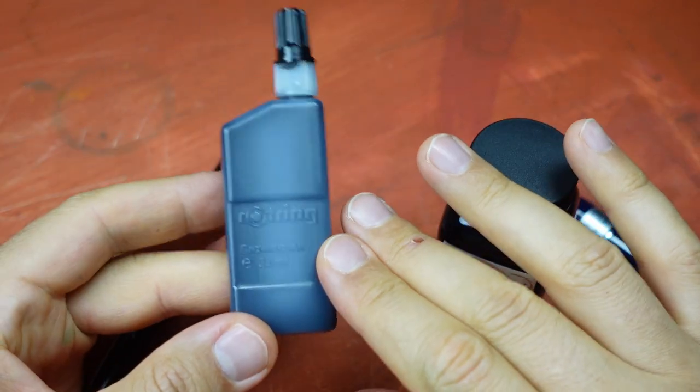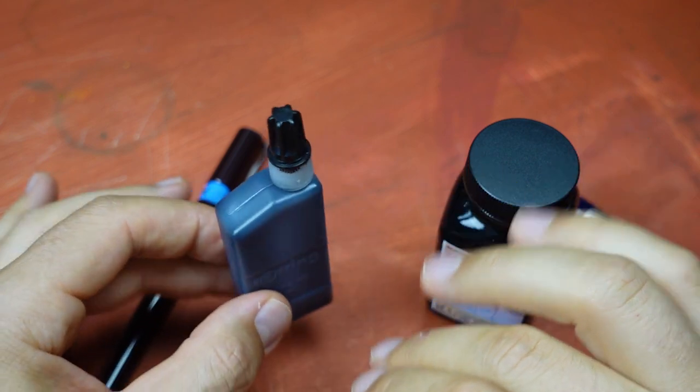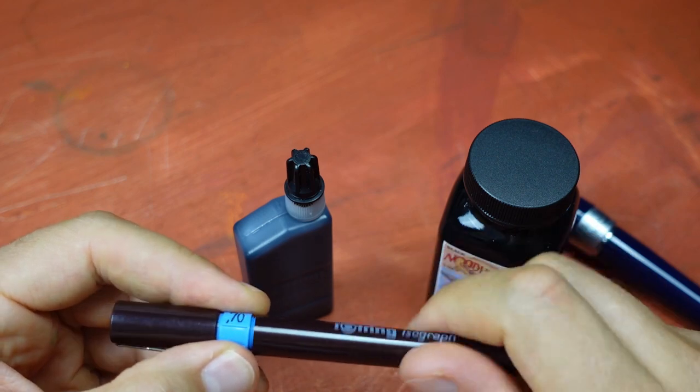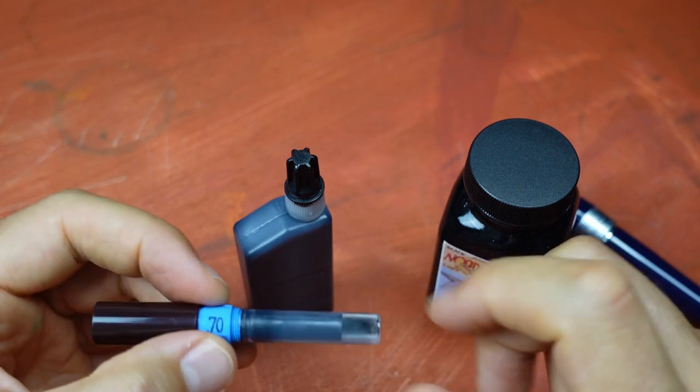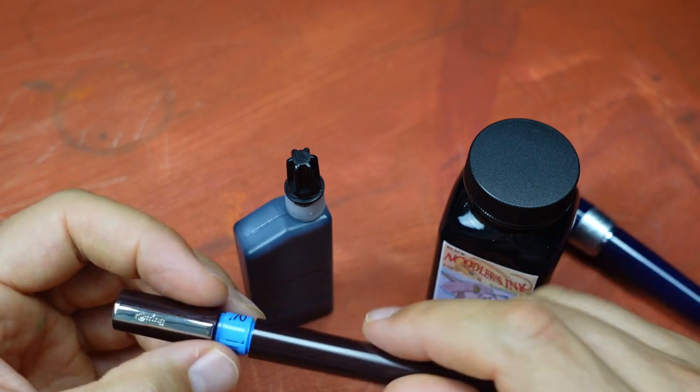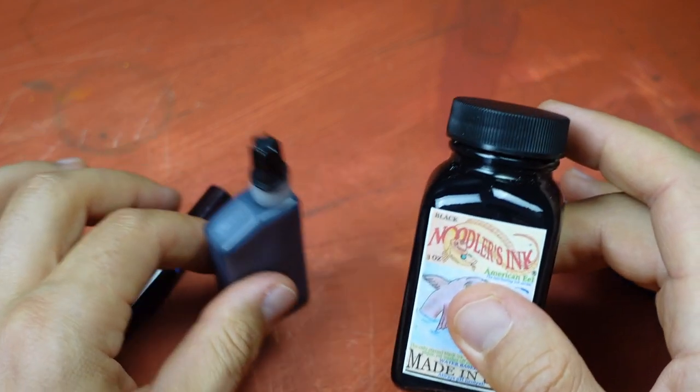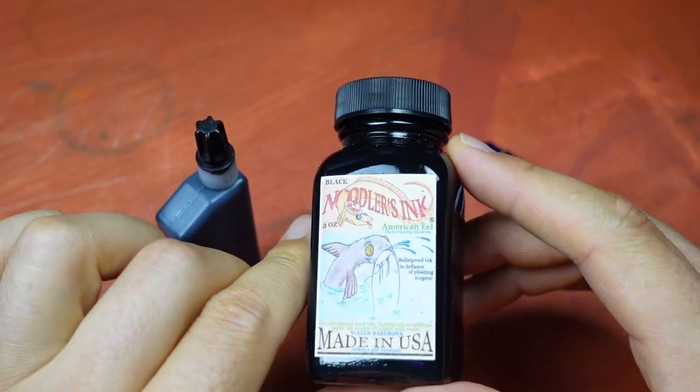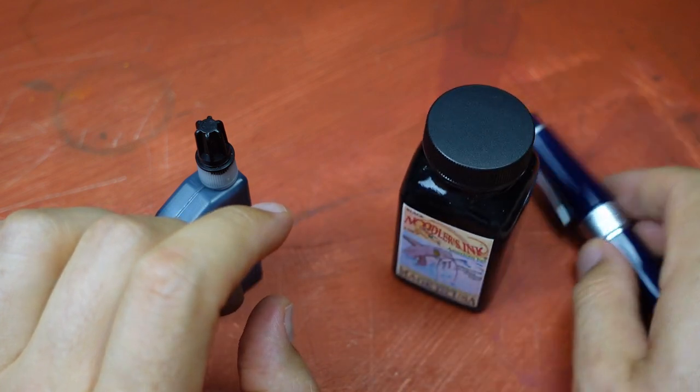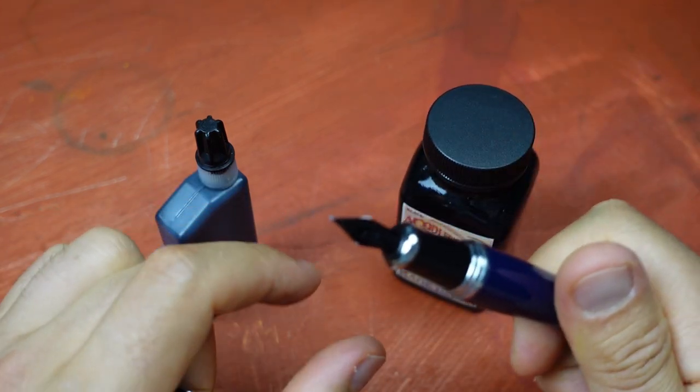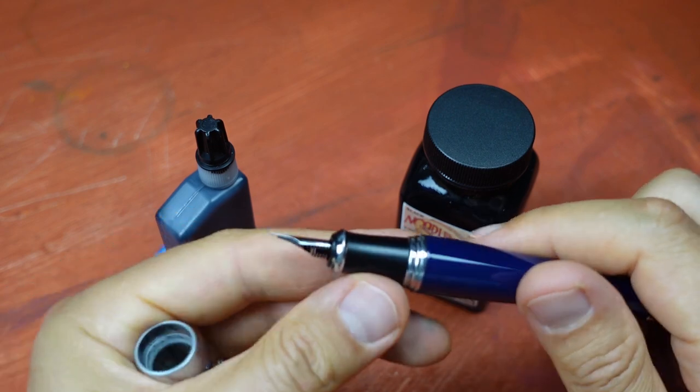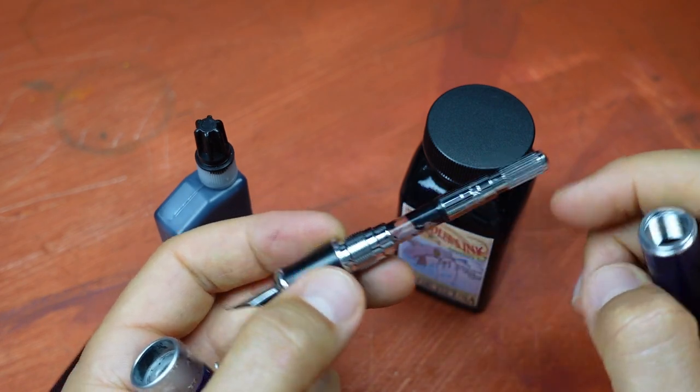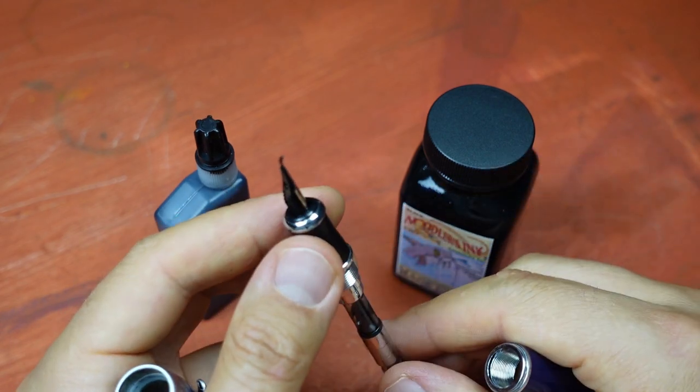Rotring drawing ink that is designed to be used for a Rotring isograph. Rotring isograph can be used with these refillable cartridges. And Noodler's ink, which is ink designed for fountain pens. And I'm using it for this Duke Bentnib fountain pen. It has this refillable piston system.